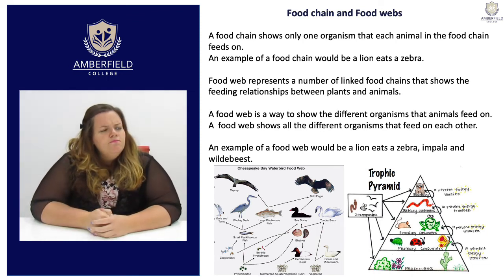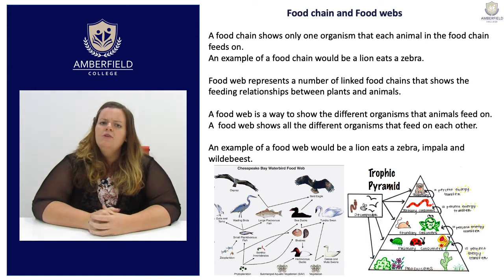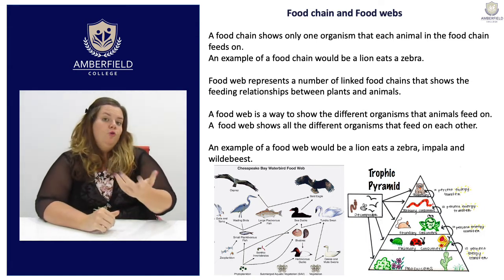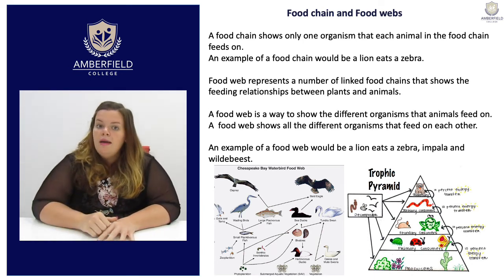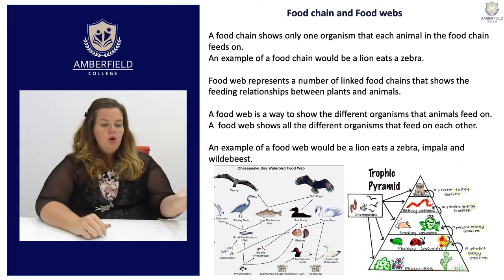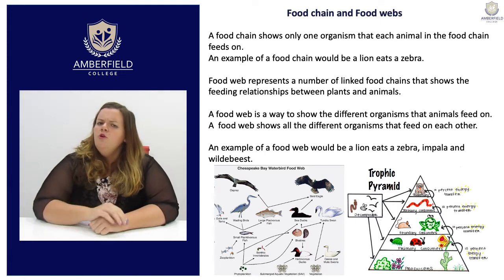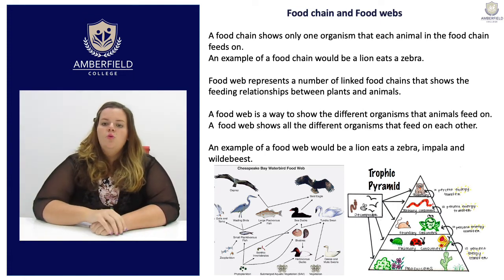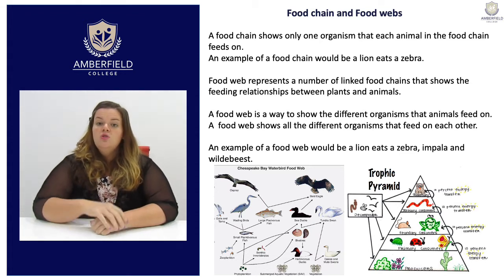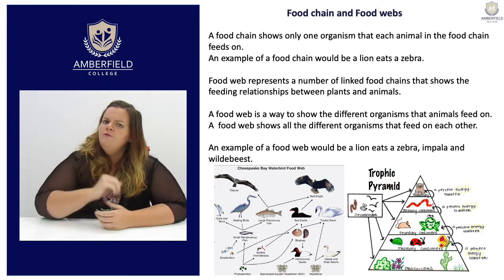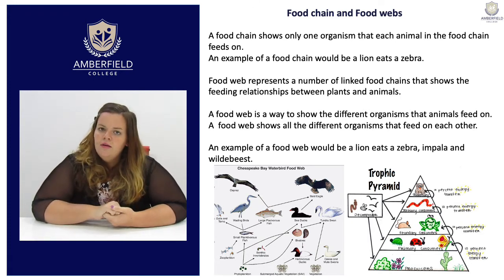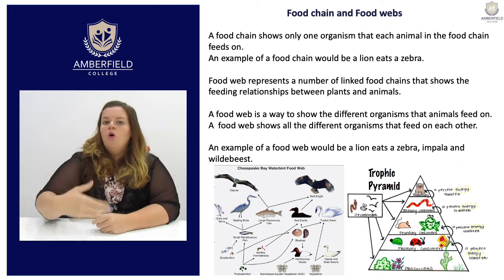A food web — what's the difference between a food chain and a food web? A food web represents a number of linked food chains, not one but multiple. This shows the feeding relationship between plants and animals. A food web is a way to show the different organisms that animals feed on — think of a spider's web, where multiple organisms feed on different things.